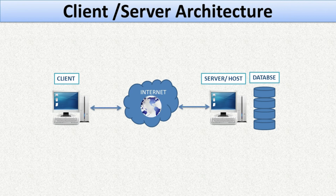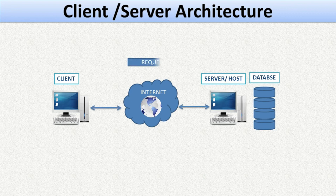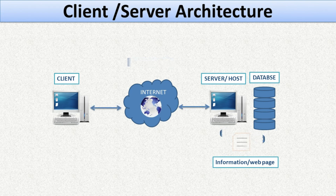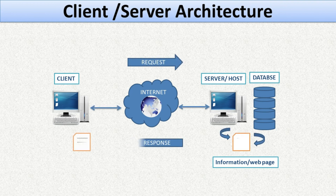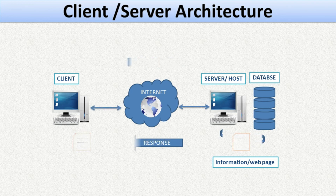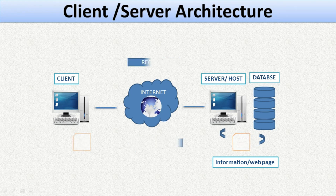In client-server architecture, the client is a computer that wants to access information or a web page from the internet, and the server is the place where that information is stored. The client computer sends a request to the server, which accepts and processes the request by searching the database. If the information is found, the server responds to the client with that information, which is then displayed on the web browser. This is how client and server computers communicate and exchange information.